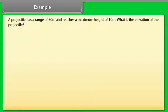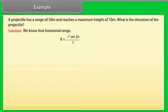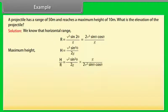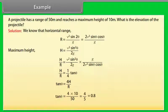Example. Let's take an example of projectile motion. A projectile has a range of 50 meters and reaches a maximum height of 10 meters. What is the elevation of the projectile? Let's see the solution. We know that horizontal range equals the product of ν² and sin 2θ divided by g. We derive the relation between height and range is given by H upon R equals 1 by 4 tan θ. On calculating this equation we get the value of θ equals 38.66 degrees.